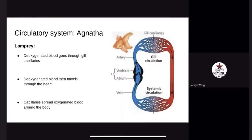The circulatory system differs in both the lamprey and the hagfish. The lamprey has a closed circulatory system with arteries and veins. They have a two-chambered heart consisting of an atrium that receives the blood and a ventricle that pumps blood into the arteries. Deoxygenated blood goes through the gill capillaries to become oxygenated, then travels through the heart into the body capillaries where it spreads oxygenated blood around the body.